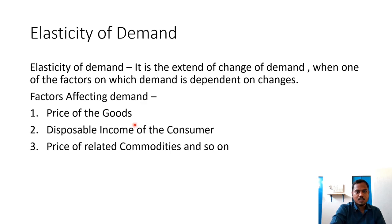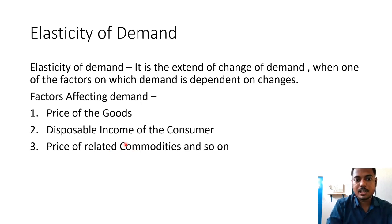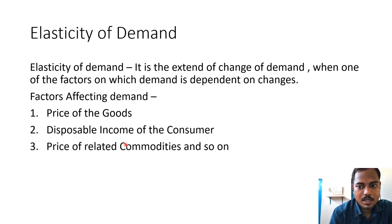One factor is the price of the goods. The second is disposable income of the consumer — disposable income means income minus taxes, that is what the consumer gets to spend. That income affects demand, price also affects demand, and price of related commodities also affects the demand of the consumer.